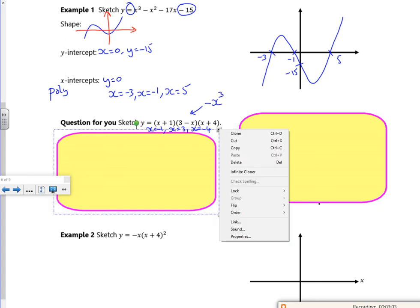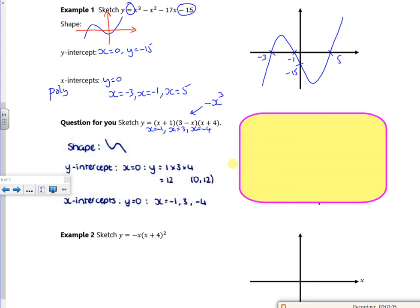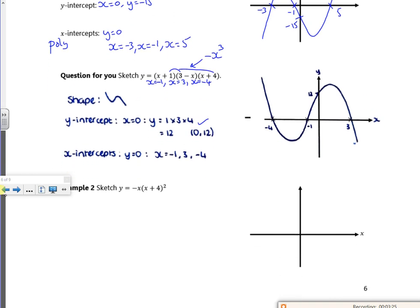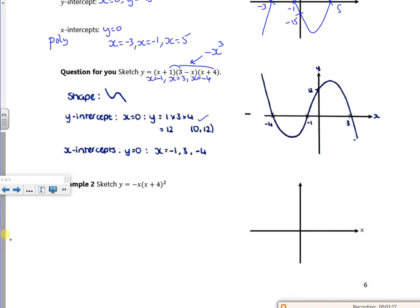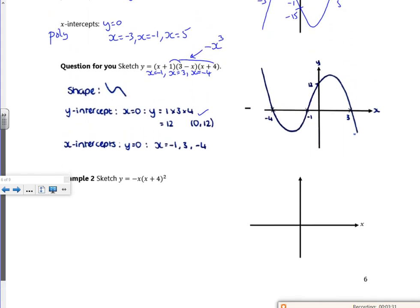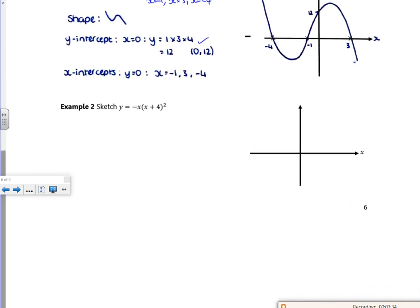So the shape is going to be upside down. If I do 1 times 3 times 4, that tells me the y-intercept. And I've got the roots there: -1, 3, and -4. So I can graph that looking something like that. Hopefully that was moderately okay - probably wasn't because the complexity of the one for you was much bigger than the one I just did.